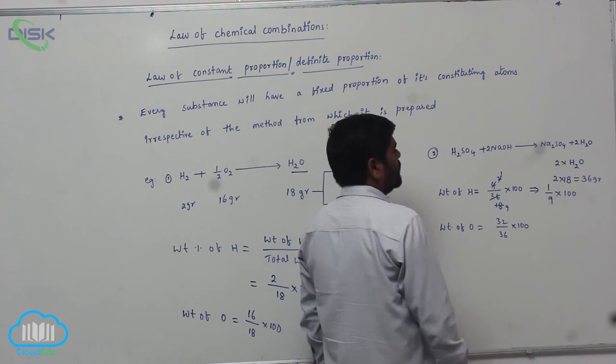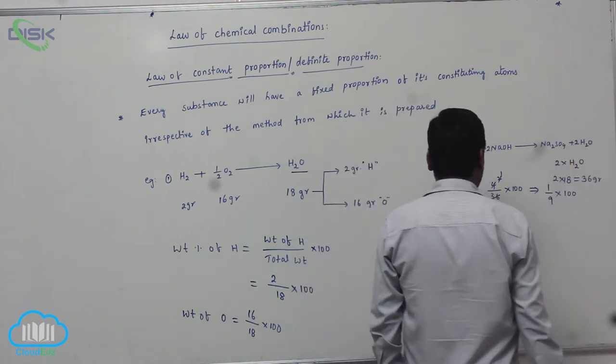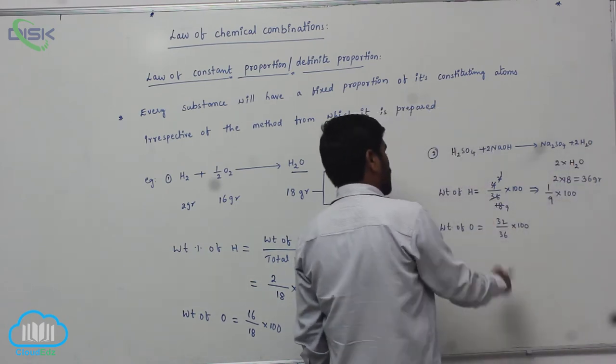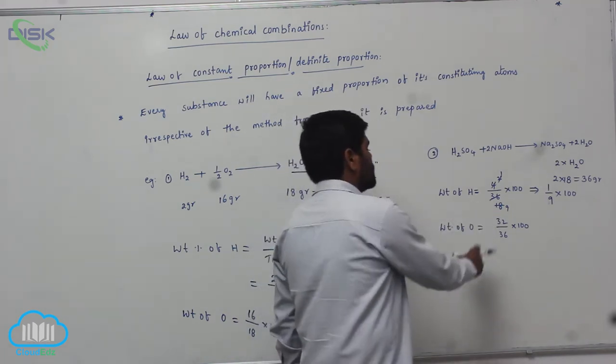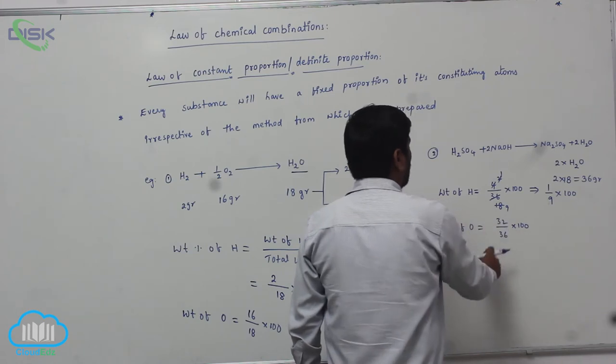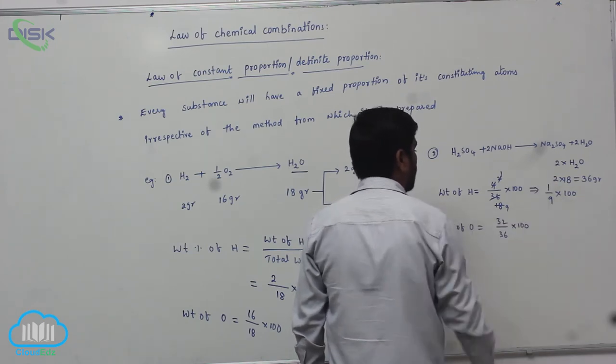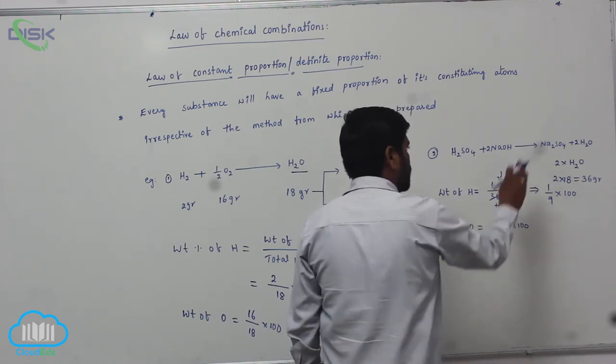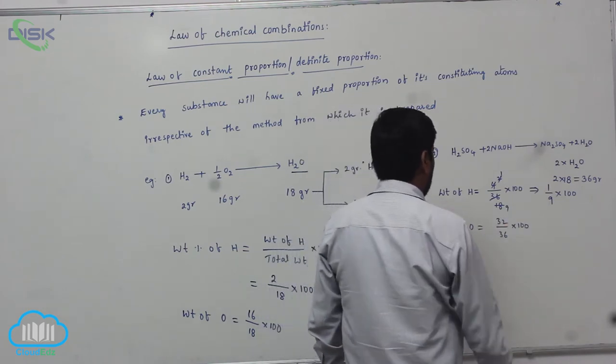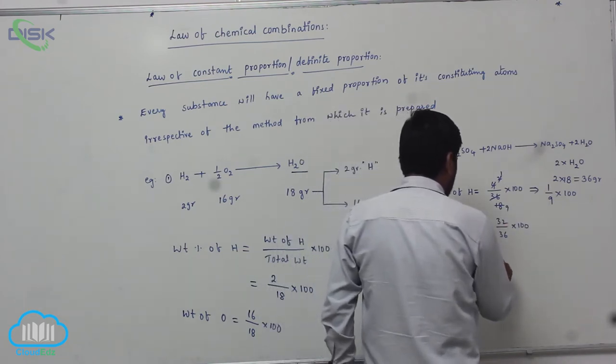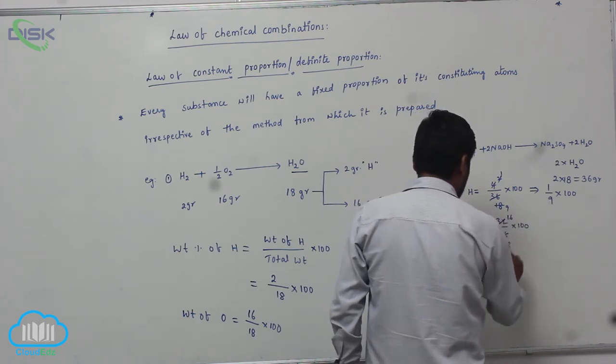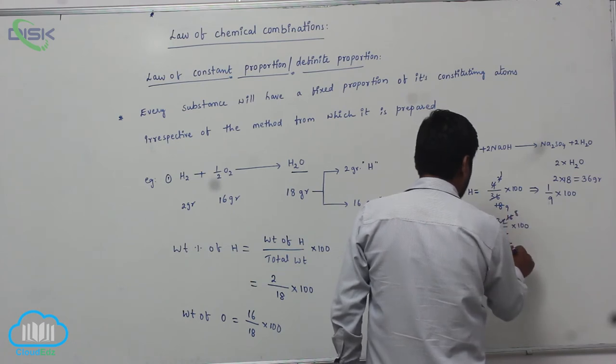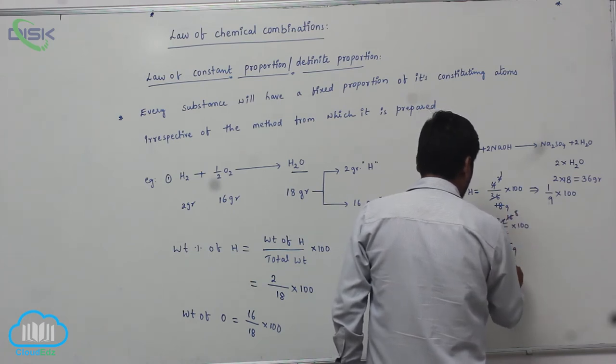In the same way, weight of oxygen, there is only oxygens, 2 oxygens. So therefore, each oxygen is 16 grams. Therefore, 2 oxygen atoms, that is why 32 grams by total weight of 2 water molecules, 36 into 100. So this equals to approximately 16s, then here is 18, then 8s, here is 9s. Therefore, 8 by 9 into 100.